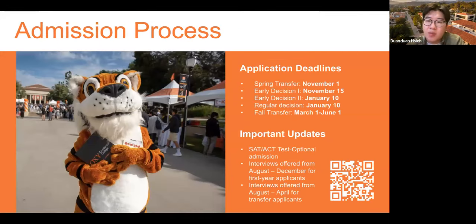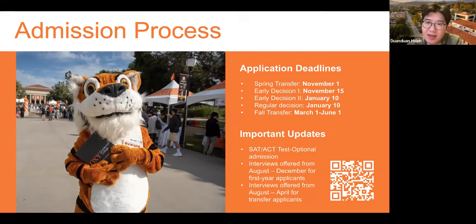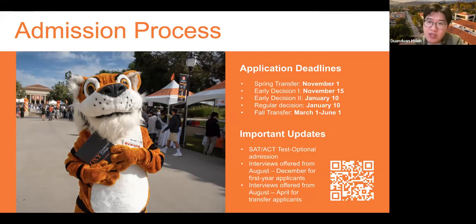In terms of the admissions process, we're on both the Common Application and Coalition Application. We have three rounds: Early Decision 1 is due November 15th, Early Decision 2 is due January 10th, and Regular Decision is also due January 10th. Early Decision is binding — you can only apply to one ED school at a time, and if admitted you must enroll. We fill about 40% of our class through Early Decision. Our ED acceptance rate is about 50%, while Regular Decision is around 30 to 33%.